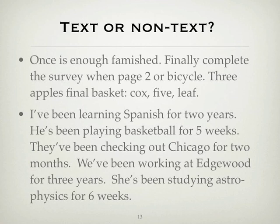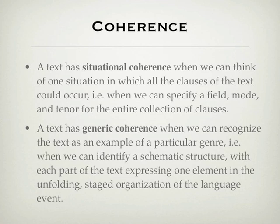What is missing is any kind of situational or contextual coherence — that is, the context that makes the paragraph meaningful. As mentioned in the last presentation, we can recognise two levels of context: context of situation, realised in the register of language, and context of culture, realised in its genres. And we can recognise two types of coherence that parallel these two levels: situational coherence and generic coherence.